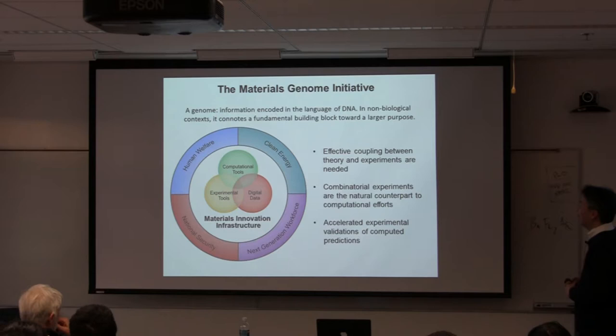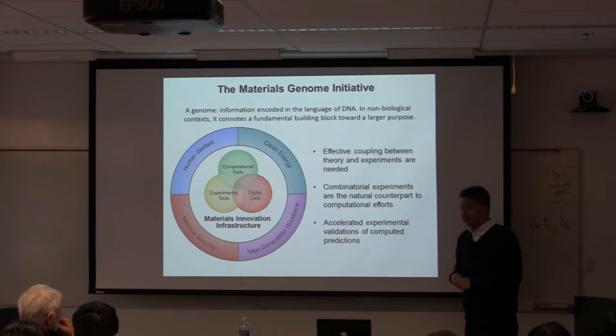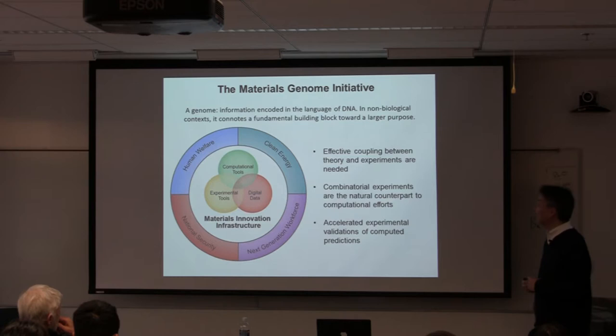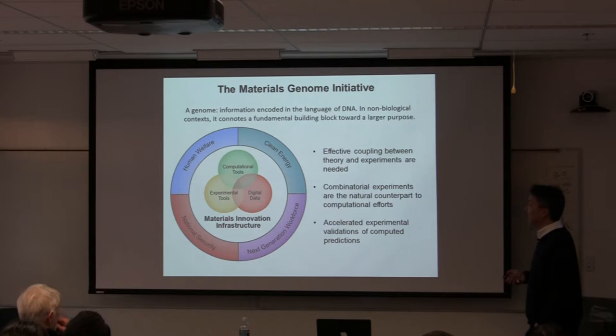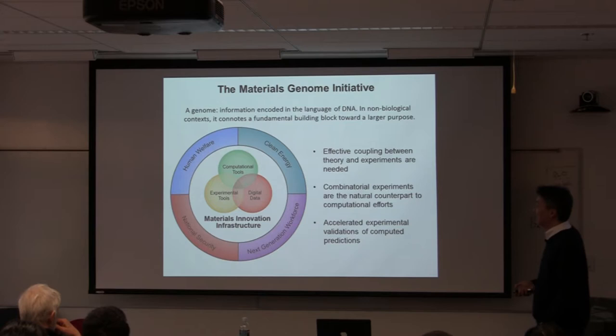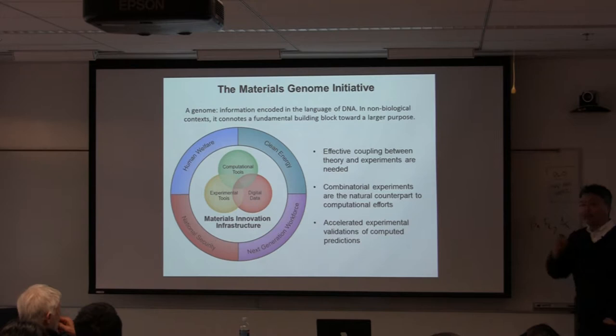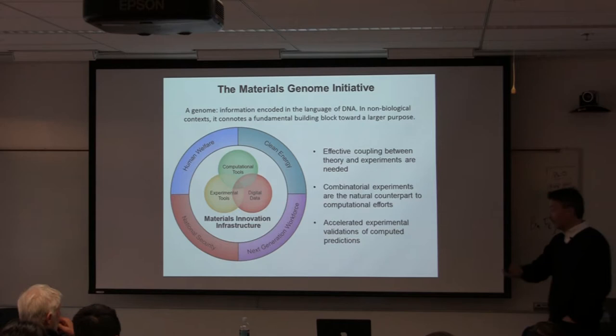The Materials Genome Initiative lives on. We need to keep advancing computational, experimental, and digital tools. Combinatorial high-throughput experiments sit at the intersection of these tools. As computational predictions of new compounds are made, we like to test them with combinatorial libraries to quickly provide feedback.